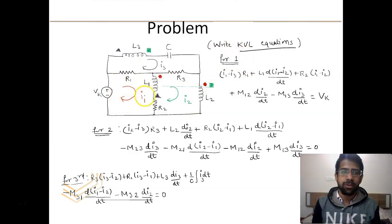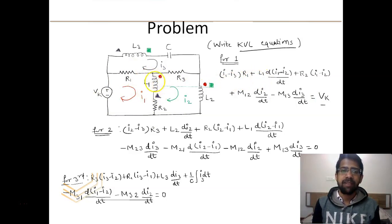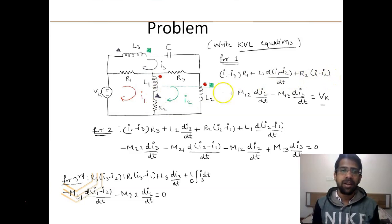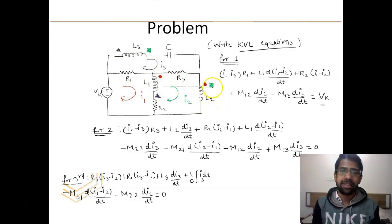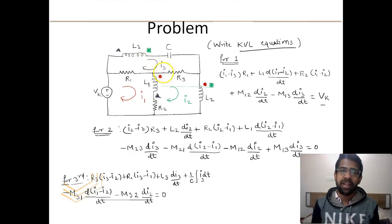For loop 1, the KVL equation is: Vs equals (I1 − I3)·R1 plus L1·d(I1 − I2)/dt plus R2·(I1 − I2). This covers the self-inductive voltage drop and resistor drops. We also need to consider the mutual inductances developed on L1 by L3 and by L2, and identify the sign of each mutual inductance term. The mutual inductance of L1 and L3 is M13, and the effect of L2 on L1 is M12.